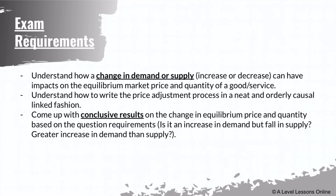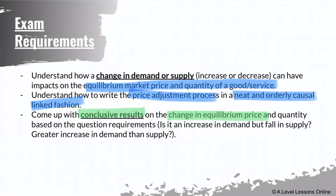For exam requirements, you need to understand how a change in demand or supply impacts equilibrium price and quantity. Understand how to write the price adjustment process in a neat, orderly causal-link fashion - convert those arrows into transition words in your essay. The most important part is to come up with conclusive results on the change in equilibrium price and quantity based on the question requirements. Always take into account cases where one shifts by a more-than-proportionate amount compared to the other.